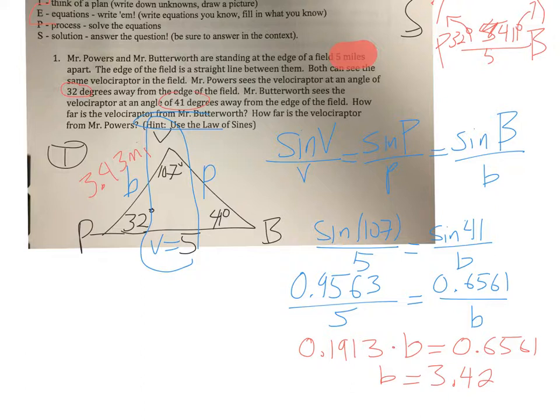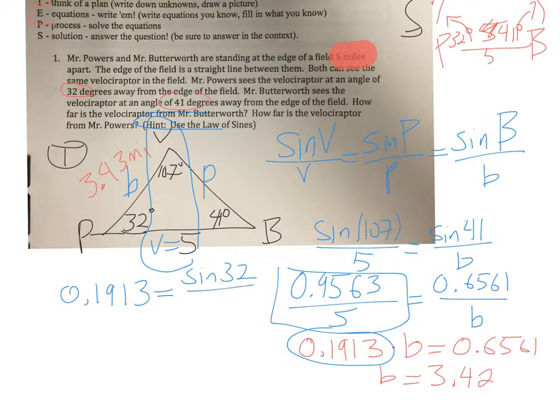I've got to do another equation for P. And I'm going to start with this value because I already did the dividing here. So 0.1913 is equal to sine of 32 over P. I'm going to multiply both sides by P. And then I'm going to divide by that 0.1913. I do have to find sine of 32. And I get 0.5299. That's going to be equal to 0.1913 times P.